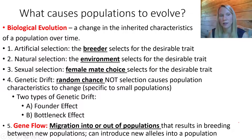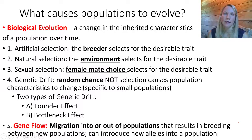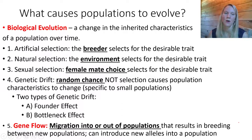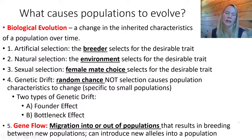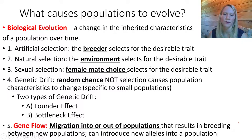Most students have trouble understanding the difference between genetic drift and gene flow, as the terms sound similar. Gene flow is more purposeful — individuals are flowing into or out of a new area and breeding. Genetic drift is like driftwood down a river — it has a random quality to it. Genetic drift is due to random events; gene flow involves purposeful migration and breeding between populations.